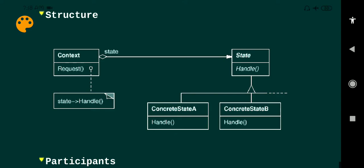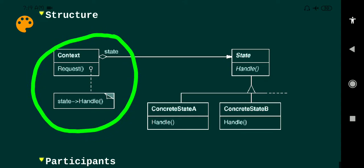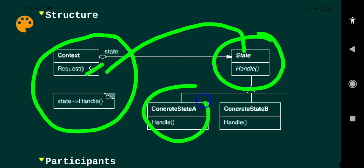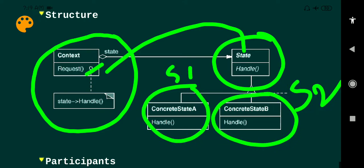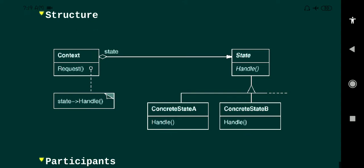Based on the motivation example, we can draw the structure of the State Design Pattern. We use TCP connection as the context. The context consists of different behaviors such as request open, close, and acknowledgement. These requests will be handled by the state classes — state one and state two. These states will handle that behavior.